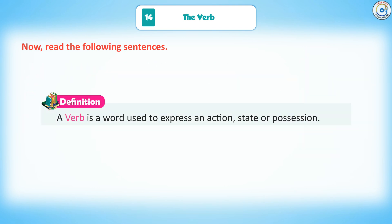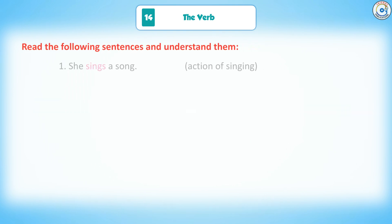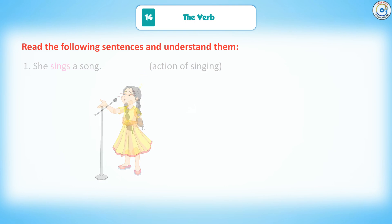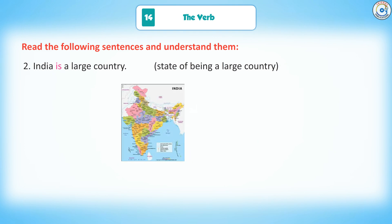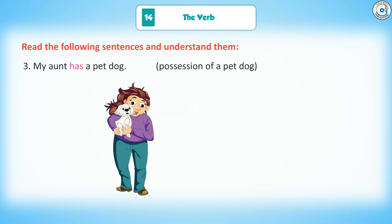Definition: A verb is a word used to express an action, state, or possession. Read the following sentences and understand them. 1. She sings a song — action of singing. 2. India is a large country — state of being a large country. 3. My aunt has a pet dog — possession of a pet dog.